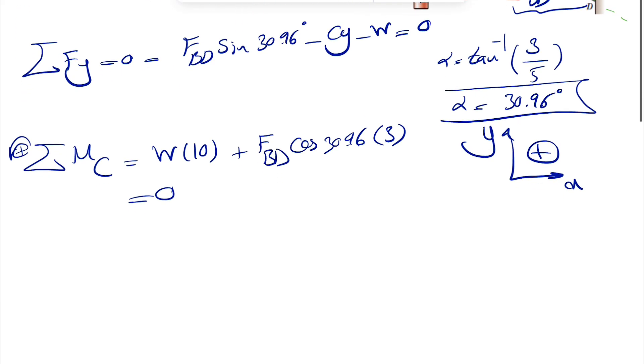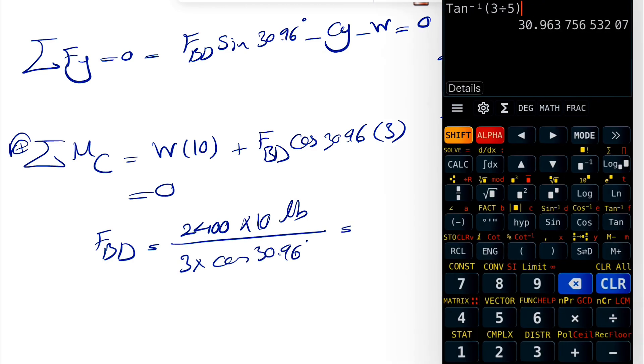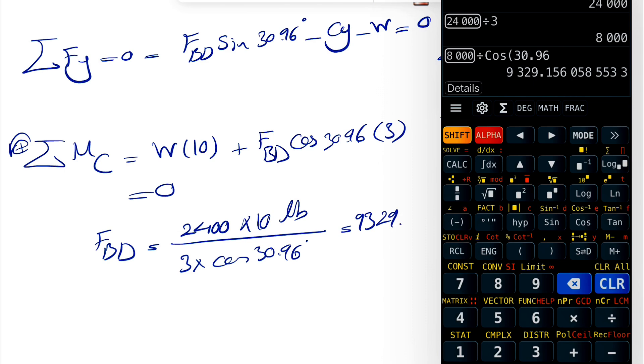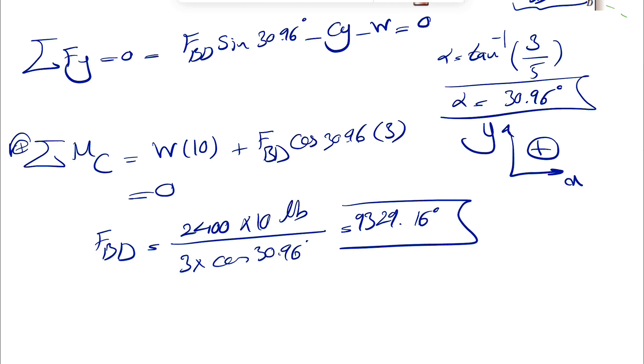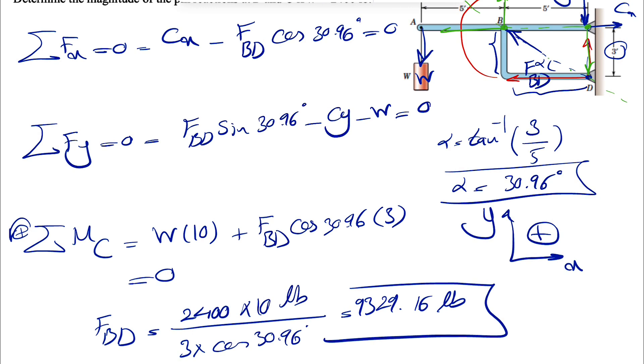And this will be equal to 0, and we should be able to find the FBD from this equation. So it will be the weight from the question we know is 2,400 pounds. So 2,400 pounds times 10 divided by 3 times cosine of 30.96 degrees. That's going to be 9,329.16. So that's our force at point B, pounds.